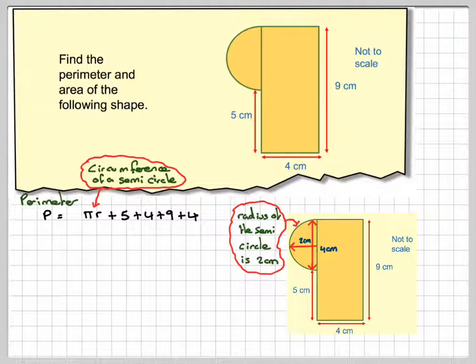Okay, so we're going to have pi times r, which is pi times 2, because the radius is 2. And 5 plus 4 plus 9 plus 2, plus 4, sorry, is 22. So we've got 2 pi plus 22. That's the exact answer.